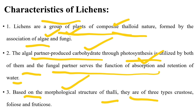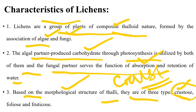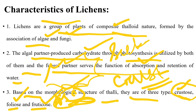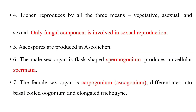Based on the morphological structure, thalli are of three types: crustose lichen, which is crust-like and closely associated with the substratum; foliose lichen, which is more or less leaf-like in structure; and fruticose lichen, which appears like a bush and attaches to the substratum by forming a disc.